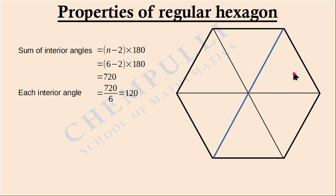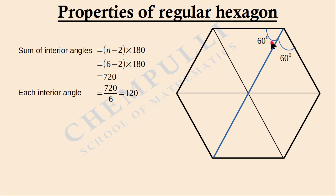Taking one line of symmetry: it divides the hexagon into two mirror-image portions. Since the total angle at each vertex is 120 degrees and the line of symmetry bisects it, each half-angle is 120 ÷ 2 = 60 degrees.